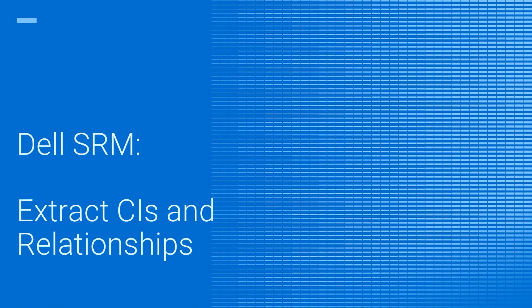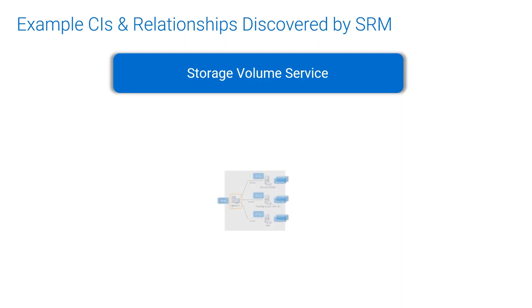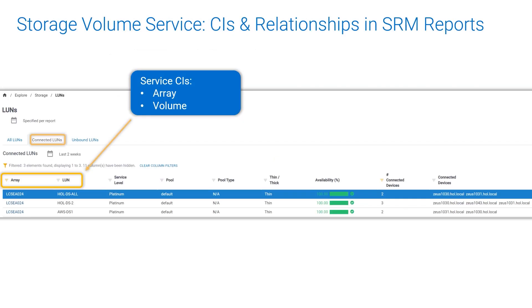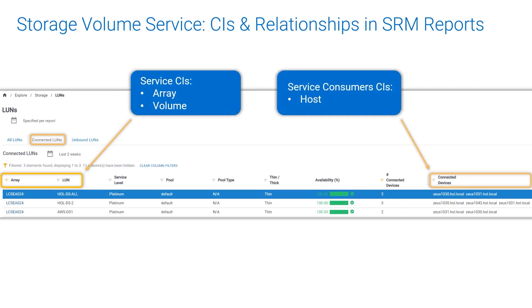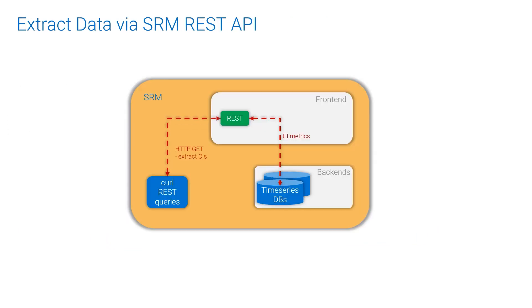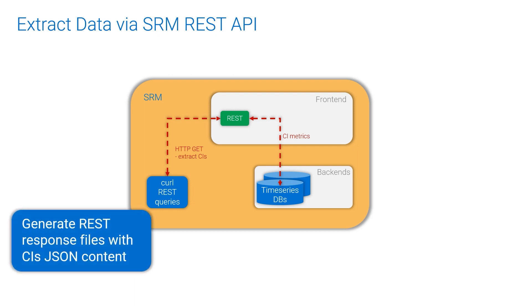We will see the required procedure to extract data from SRM. This demo focuses on an example of Storage Volume Service represented by a topology diagram from SRM. Storage Volume Service components are shown in SRM's connected LANs end-to-end report. CI data from time-series databases is extracted via SRM REST API and stored into JSON files.